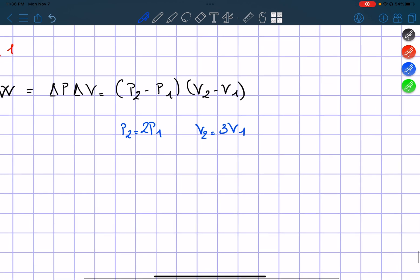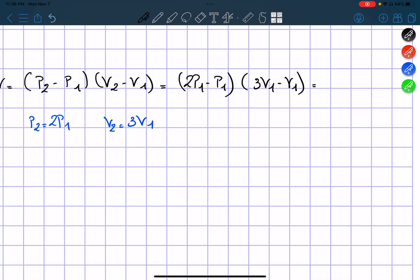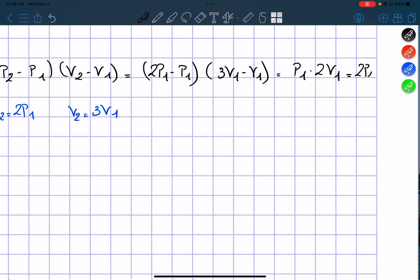So if we substitute it in there we get 2P1 minus P1 times 3V1 minus V1 and therefore it becomes P1 times 2V1, or 2P1V1.